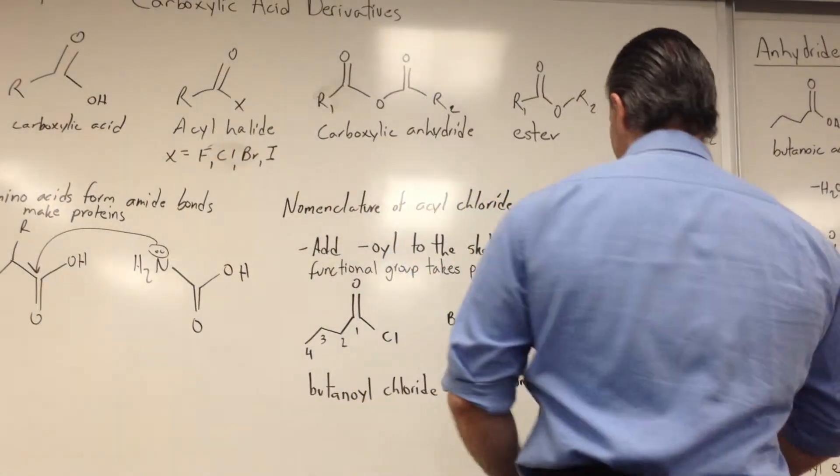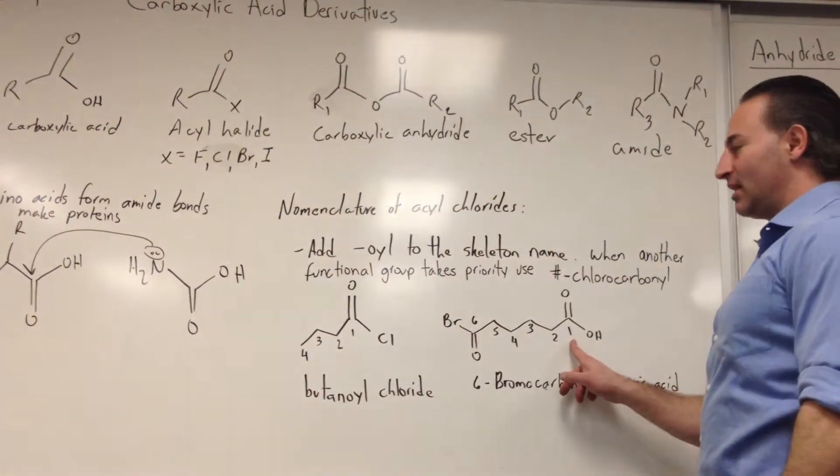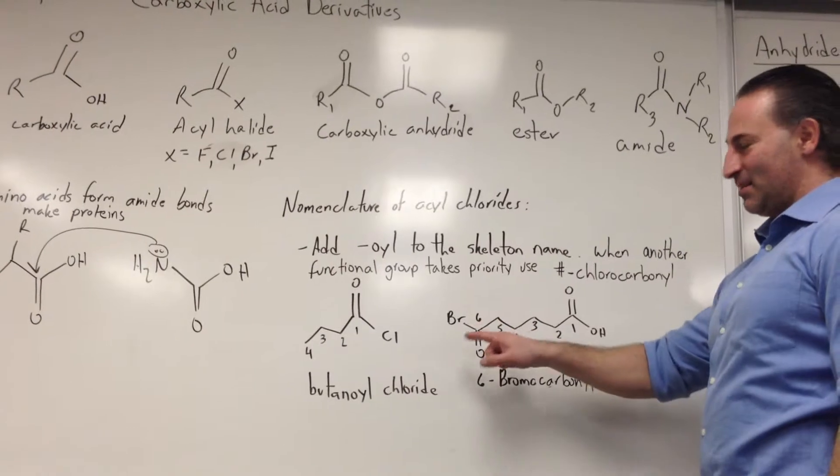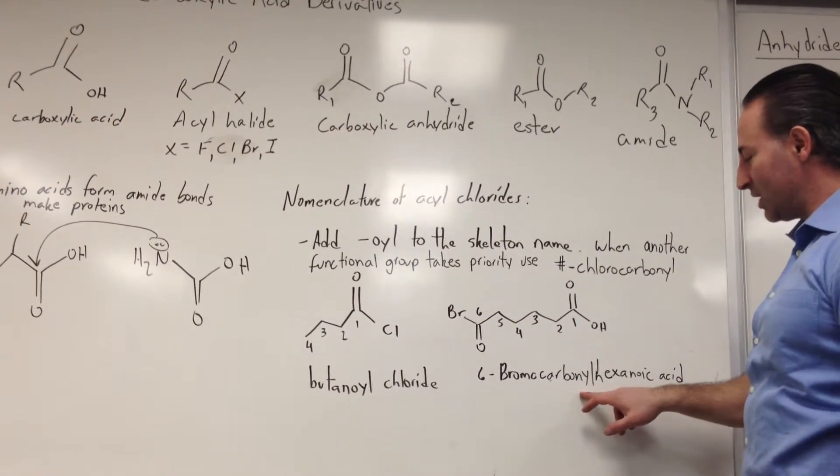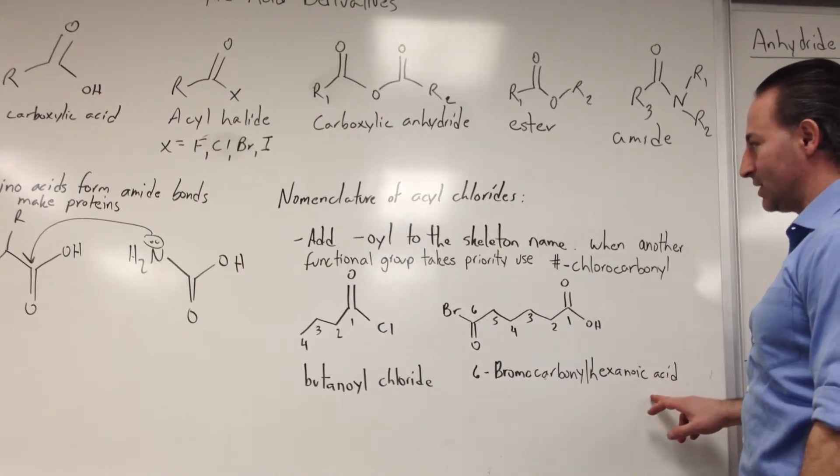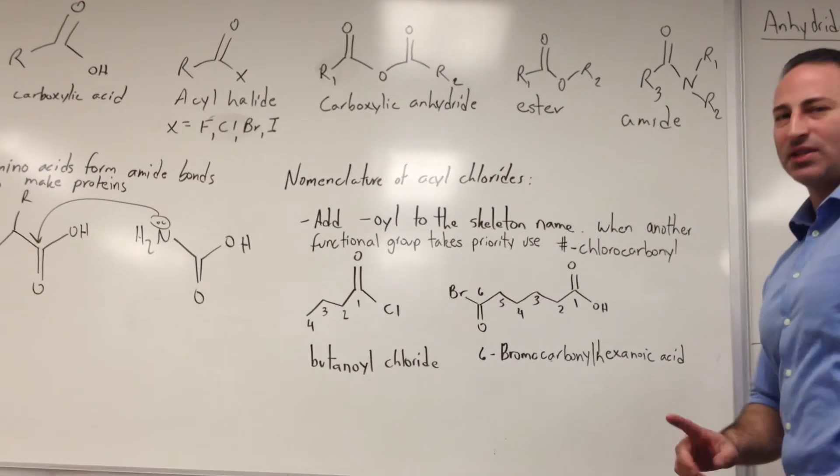In this molecule, we have a carboxylic acid on this end and a bromine on that end, so we call it 6-bromocarbonyl hexanoic acid. Let's pause it there.